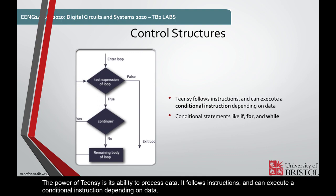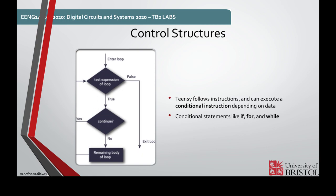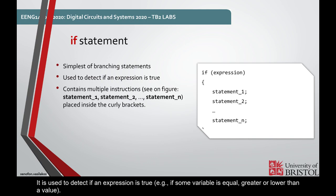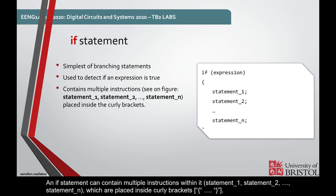The power of Teensy is its ability to process data. It follows instructions and can execute a conditional instruction dependent on data. These instructions come in the form of conditional statements like if, for, and while. The if statement is the simplest one out of all branching statements. It is used to detect if an expression is true, for example if some variable is equal, greater or lower than a value. An if statement can contain multiple instructions within it, statement_1, statement_2, and so forth, which are placed inside curly braces.